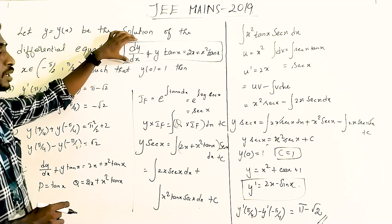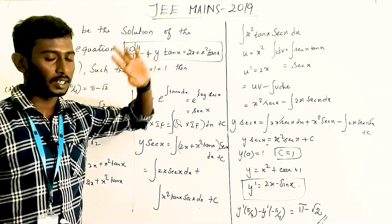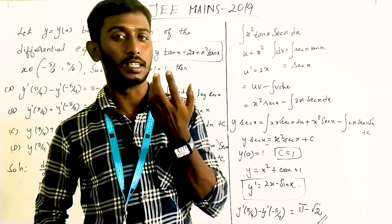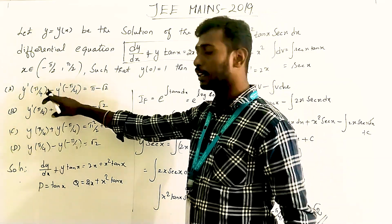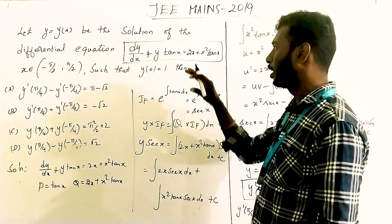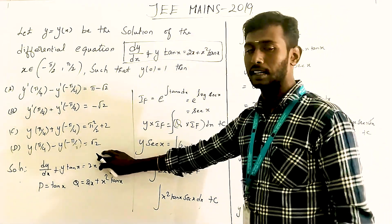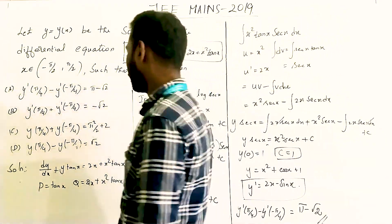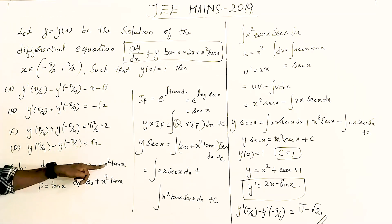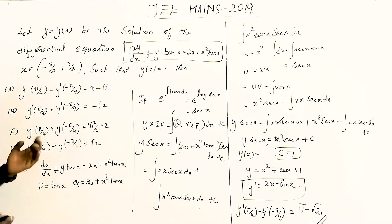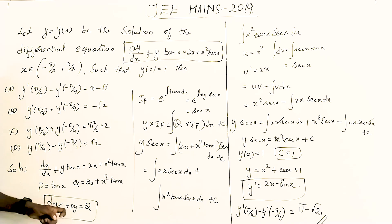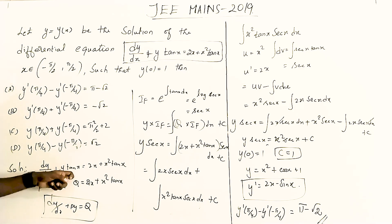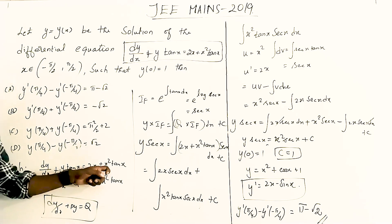We are given dy/dx + y·tan x = 2x + x²·tan x. This is a linear differential equation of the standard form dy/dx + py = q. So p is equal to tan x, and q is equal to 2x + x²·tan x.